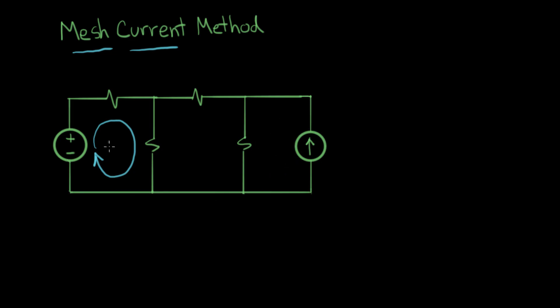This will be our mesh current number one, we'll call it I1, and we can define these other mesh currents like this. I'm going to define them all to go around in the same direction, they're all going clockwise around our circuit.